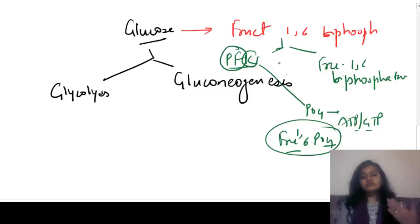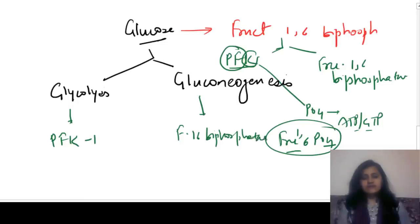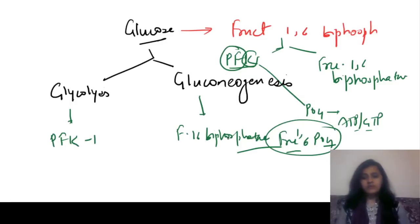So phosphofructokinase is the rate limiting enzyme for glycolysis, specifically phosphofructokinase-1. For gluconeogenesis, the rate limiting enzyme is fructose 1,6-bisphosphatase. Some books also mention multiple regulatory enzymes for gluconeogenesis, like pyruvate carboxylase and PEP carboxykinase.